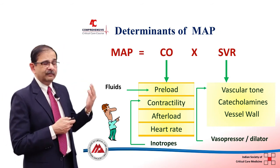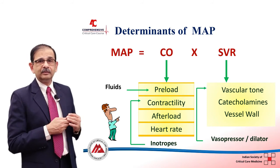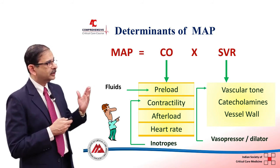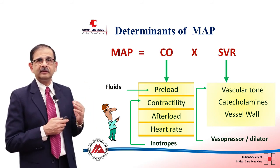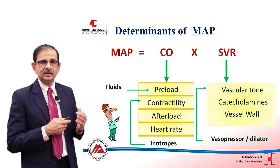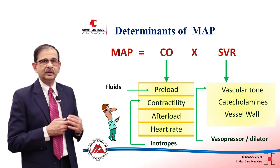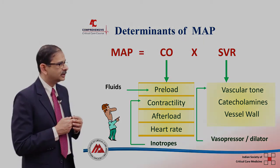When we look at the mean arterial pressure, we know that we have to manipulate the cardiac output and the vascular resistance in order to treat the hemodynamic derangement.